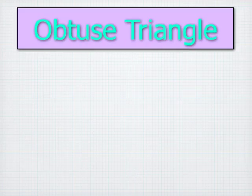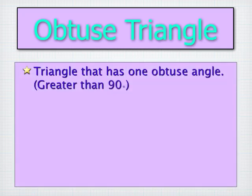Lastly, a triangle can be categorized as an obtuse triangle. It has one obtuse angle, meaning the angle is greater than 90 degrees. And there's the example.